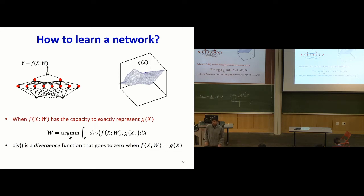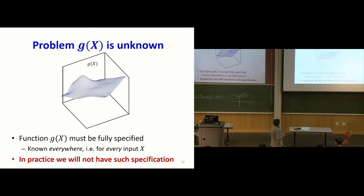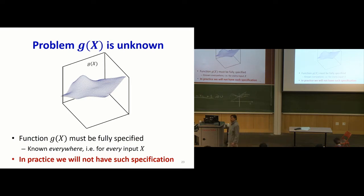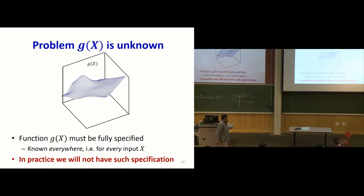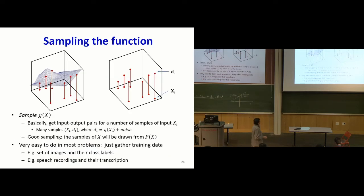What is the problem with this approach? G(x) must be specified everywhere. I need to know g(x) over all of x, and of course that's not going to be given in practice.